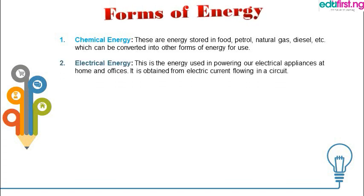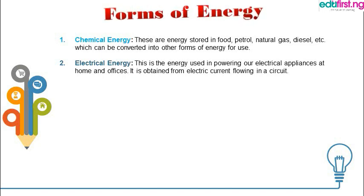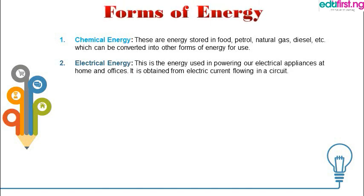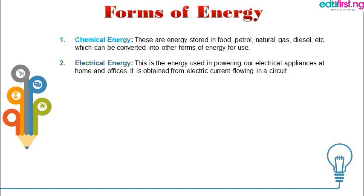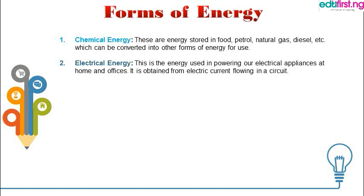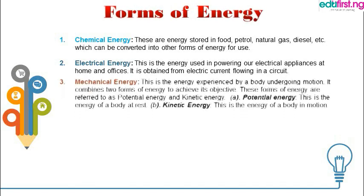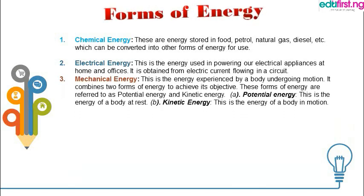Next, we have electrical energy. This is the energy stored or used by electric appliances at home. It is obtained from electric current flowing in a circuit. Once you switch on a device, there is a flow of energy from your power source to the device — be it your TV, your home theater, your phone, or whatever device you're using. That form of energy that powers your TV is electrical energy.